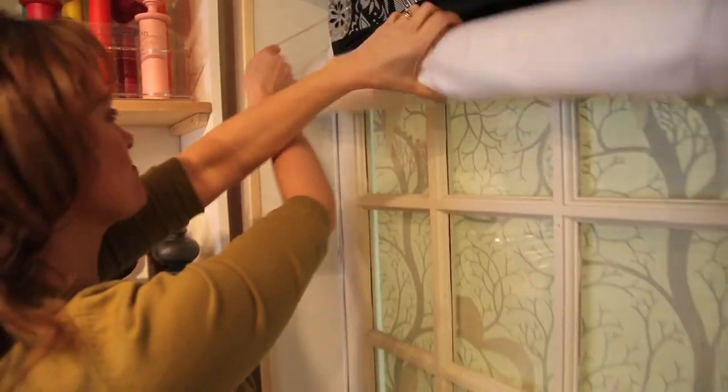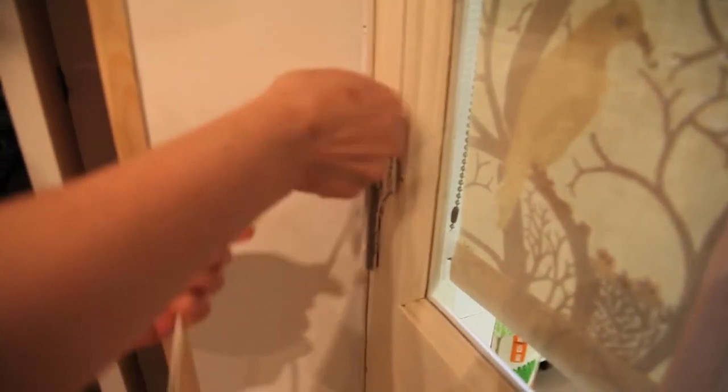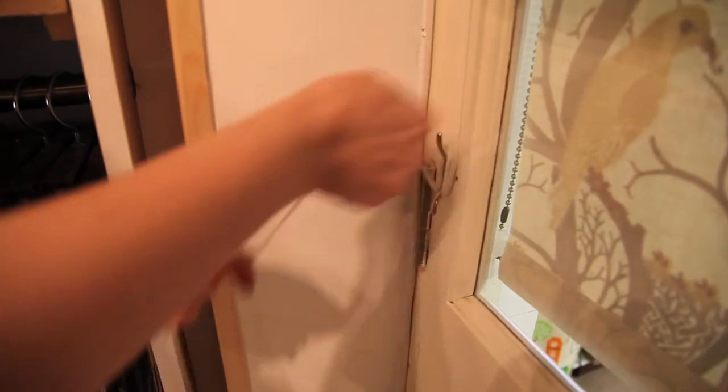Hold on to the cords. If you can't be bothered to keep winding all of that stuff around there, we put on a lazy ring. This is just a brass curtain ring that just loops under the cleat.